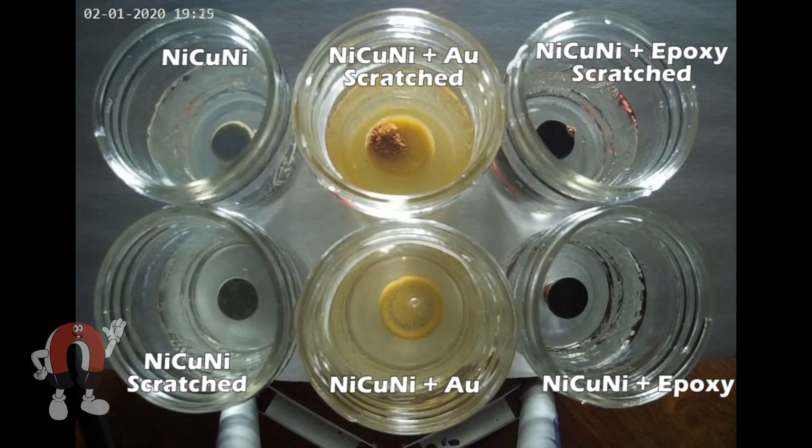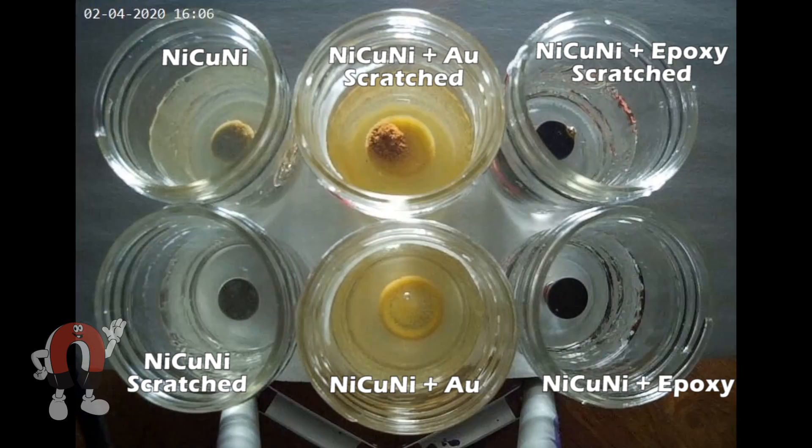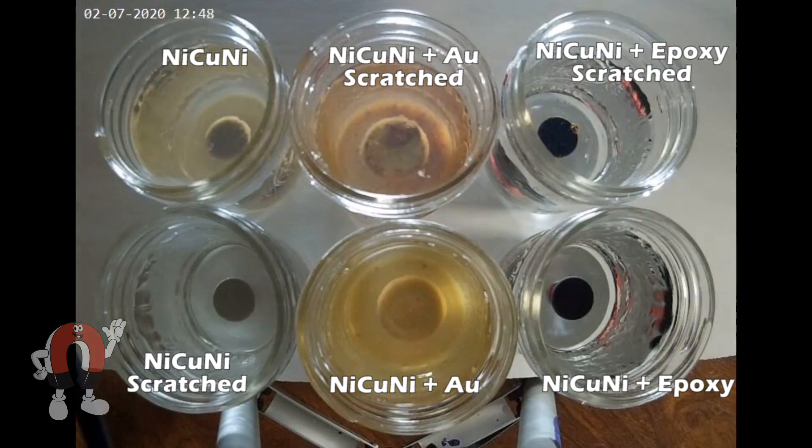Our standard nickel plating is actually a triple plating that's made up of nickel, copper, then nickel again. The additional gold and epoxy layers are applied onto that triple plating.